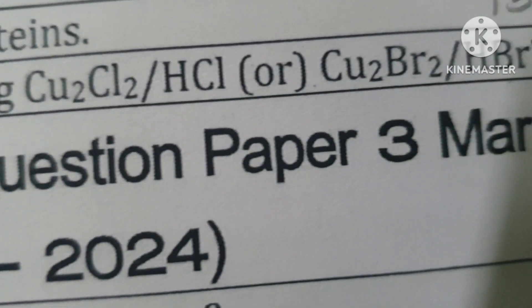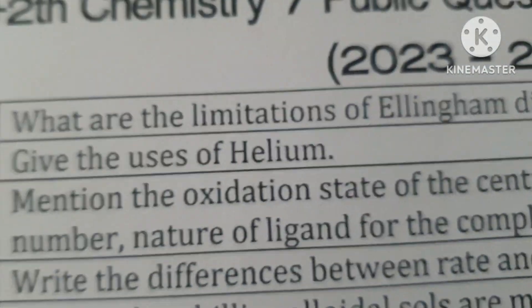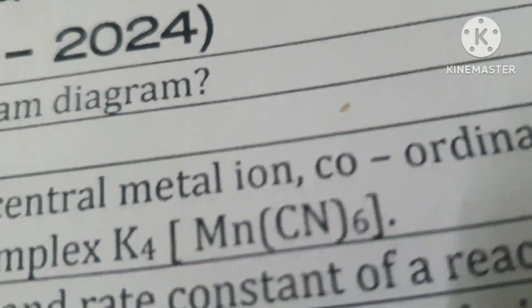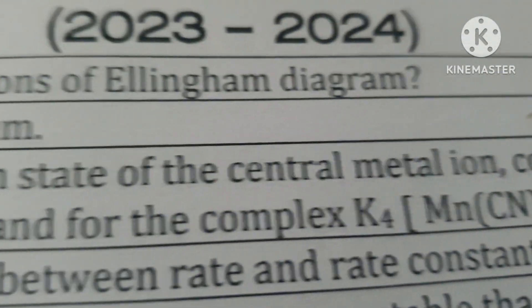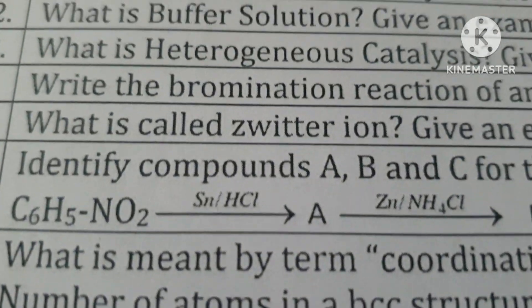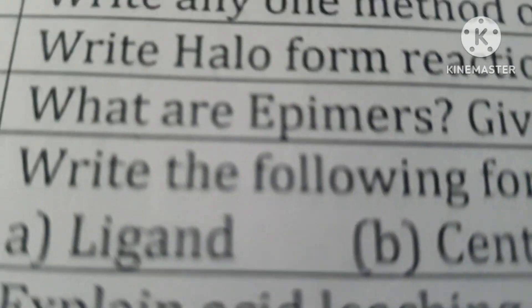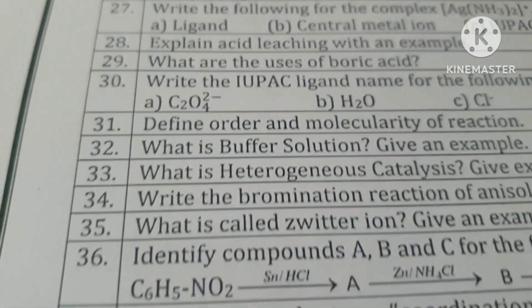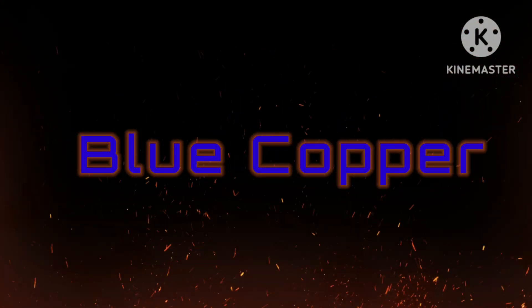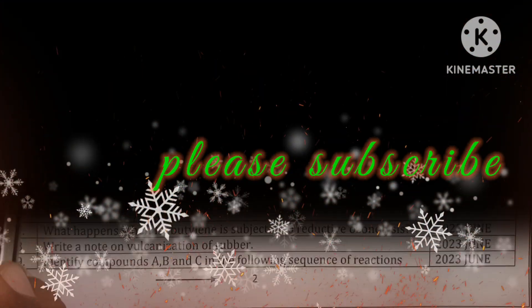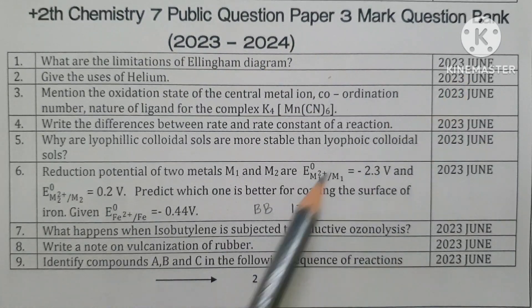This video covers selected questions from the Plus Two Chemistry public question paper. Topics include: uses of helium, oxidation state of the central metal ion and coordination number for the complex K4[Mn(CN)6], time required for completion of 99% of a chemical reaction being twice the time for 90% completion, Helmholtz electrical double layer, Faraday's law, and food preservatives.